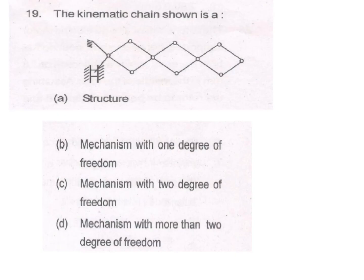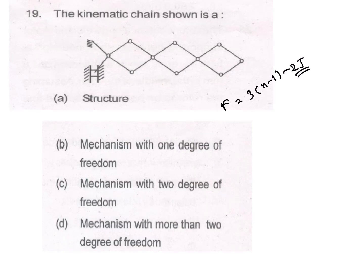You have to consider the number of links, then solve this question using the degree of freedom formula: F equal to 3(n−1) minus 2j, where j is the number of binary pairs and n is the number of links. The answer will give a mechanism with 1 degree of freedom.